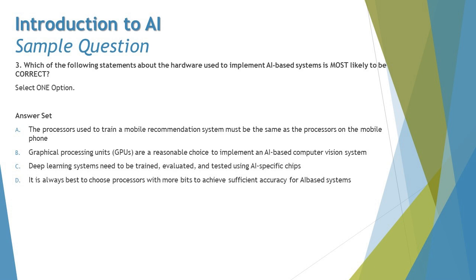Option C says deep learning systems need to be trained, evaluated, and tested using AI-specific chips. It is actually possible to train, evaluate, and test a simple deep learning system on a PC with limited GPU support — specific AI chips are not at all mandatory. They would be faster, but they are not necessary. So C does not get as close as B to being the most correct statement.